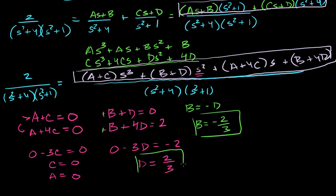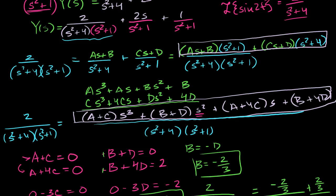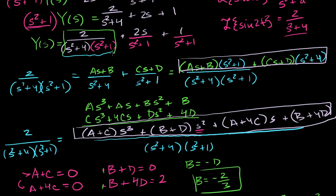So we can rewrite 2 over (s squared plus 4)(s squared plus 1) as: with a = 0 and b = −2/3, that's −2/3 over s squared plus 4; and with c = 0 and d = 2/3, that's plus 2/3 over s squared plus 1. All that work was just to break up that one piece.